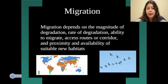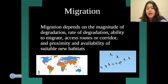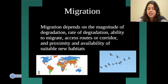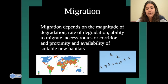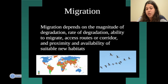Migration depends on different factors: the magnitude of degradation, the rate of degradation, and the ability to migrate to different distances. For example, birds and geese can migrate to warmer areas in winter, but they must access routes or corridors. The proximity and availability of suitable new habitat also matters, as some animals cannot migrate as far as others.